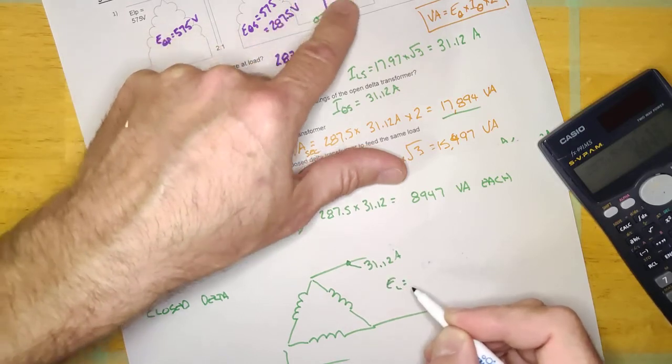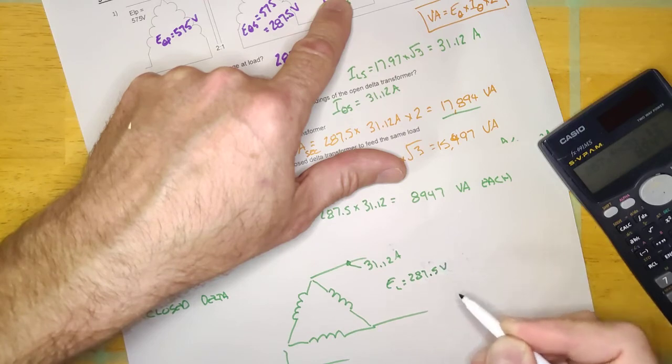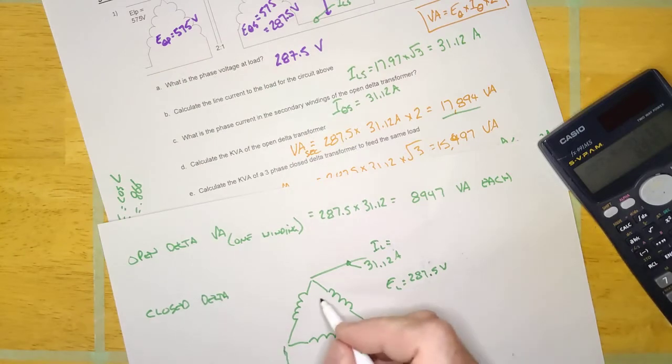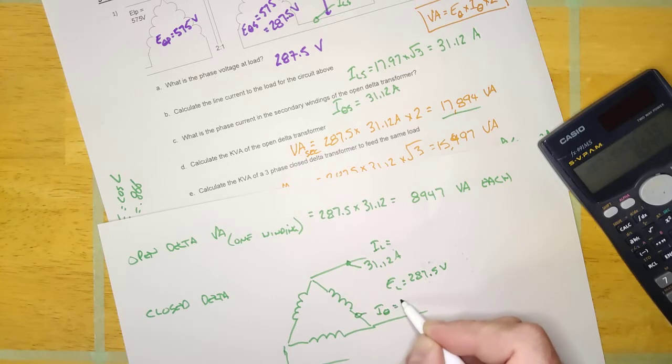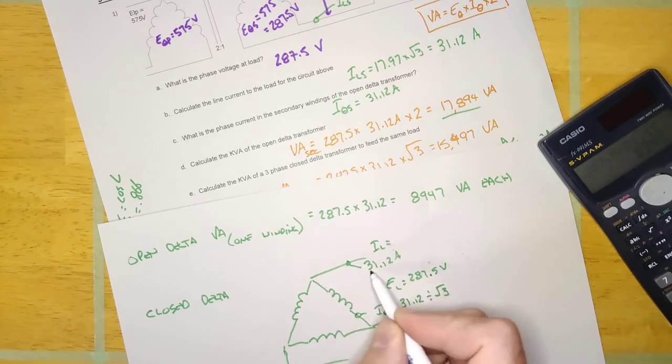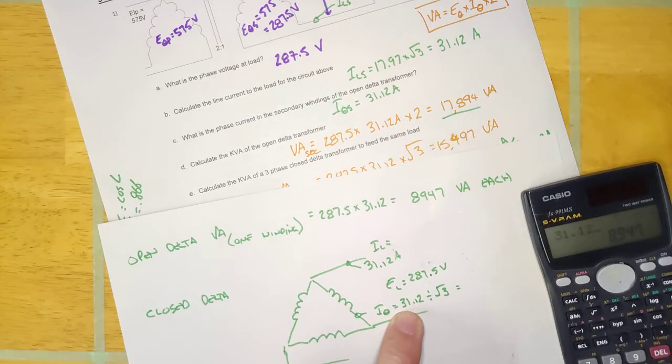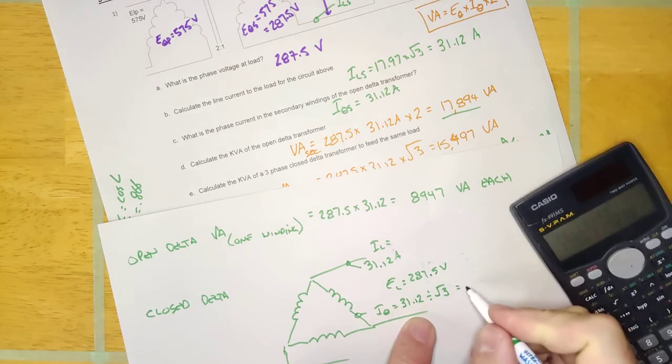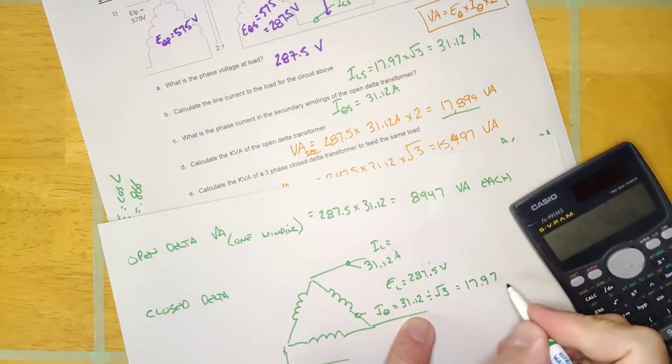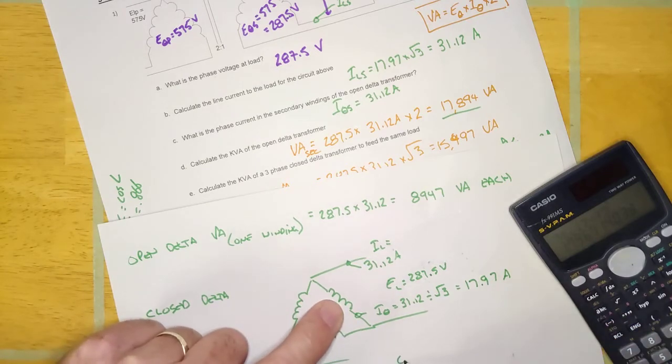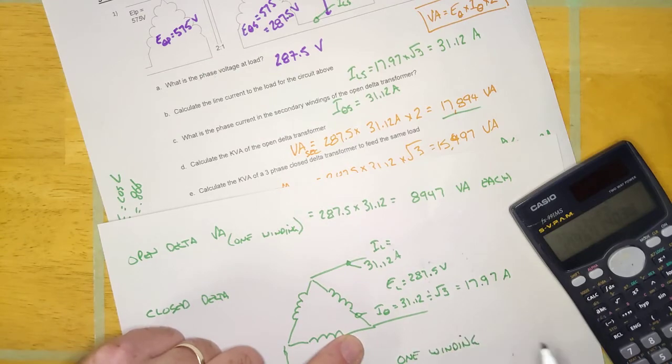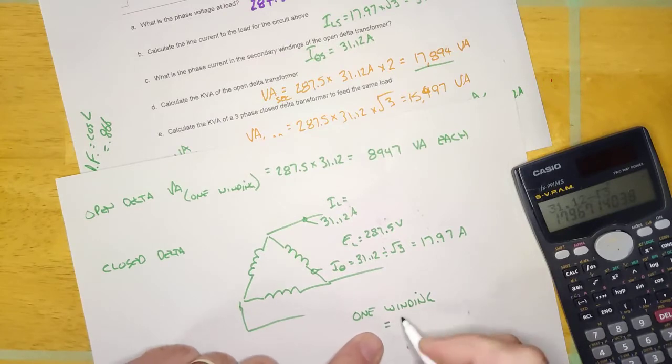And we could calculate I phase right here. I phase, it would be 31.12 divided by root 3, right? If I had a line voltage of 31, then it would get split. So let's just calculate that real quick here. 31.12 divided by root 3, it'd be 17.97 amps.